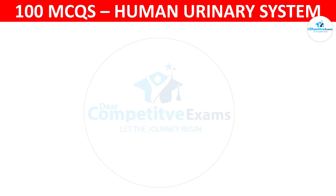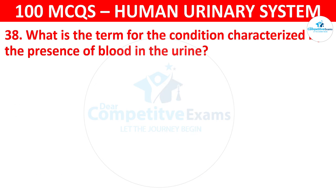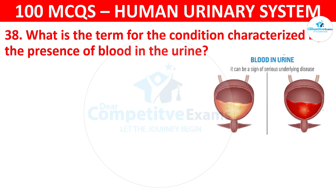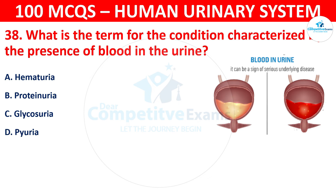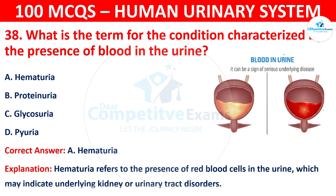Question 38: What is the term for the condition characterized by the presence of blood in the urine? The options are: hematuria, proteinuria, glycosuria, or pyuria. The correct answer is A, that is hematuria. Hematuria refers to the presence of red blood cells in the urine, which may indicate underlying kidney or urinary tract disorders.